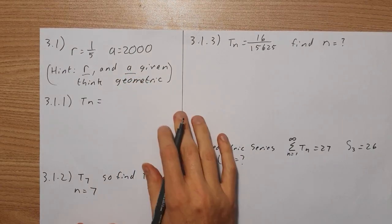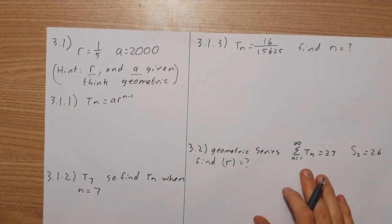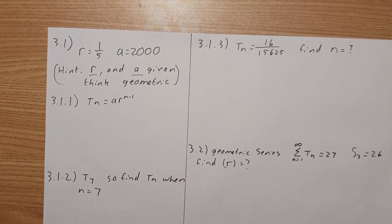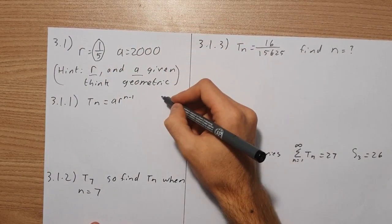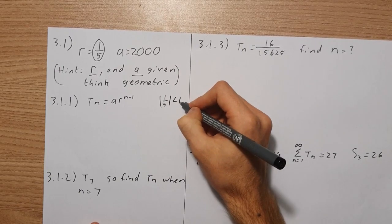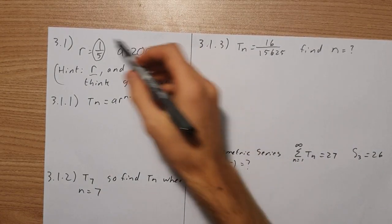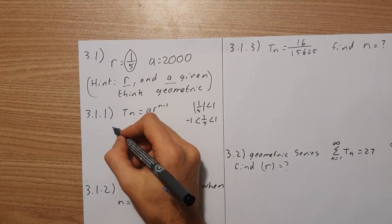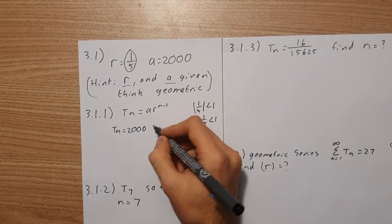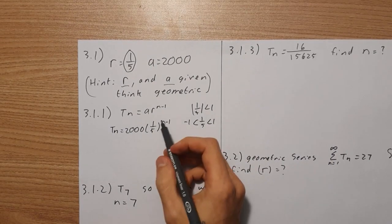The geometric general term is given as a times r to the n minus 1. It is an exponential series, so it's either going to grow to infinity meaning it diverges, or decrease to a point meaning it converges. Note that r is 1 over 5, and because the absolute value of 1 over 5 is less than 1, it sits between negative 1 and 1. Therefore this series will converge. So Tn equals 2000 times 1 over 5 to the n minus 1, and that's just going to be our general solution for this series.